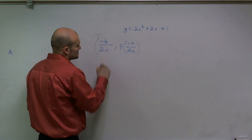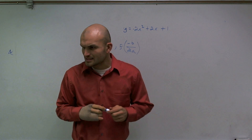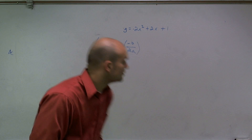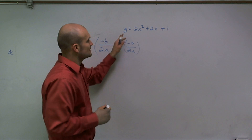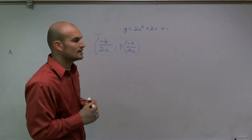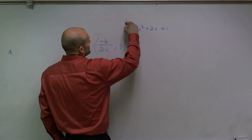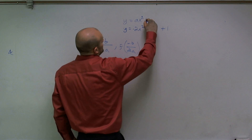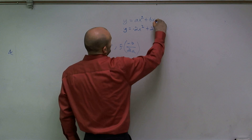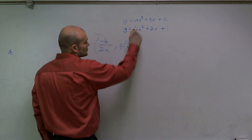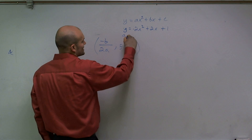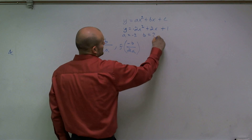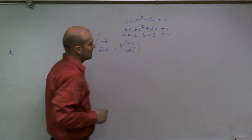This might be like, what does all that stuff mean? Well, we know that a quadratic — this is a quadratic polynomial — it can be written in the form ax squared plus bx plus c. So in this problem, I can say a equals negative 2, b equals 2, and c equals 1.